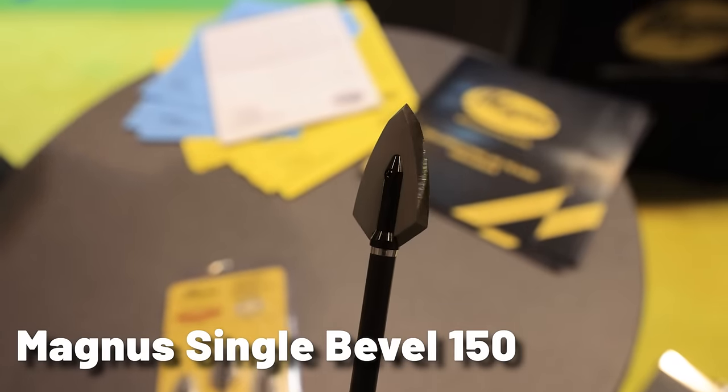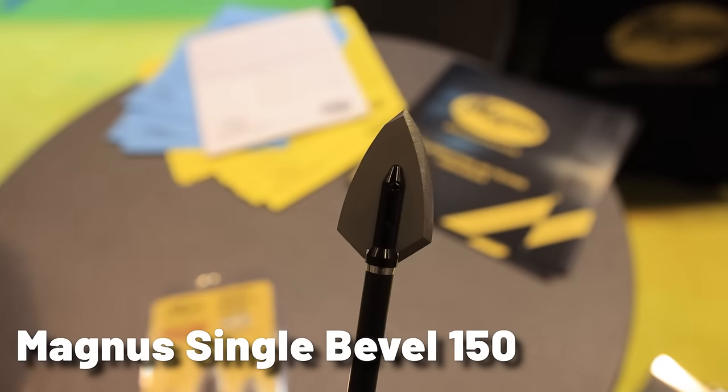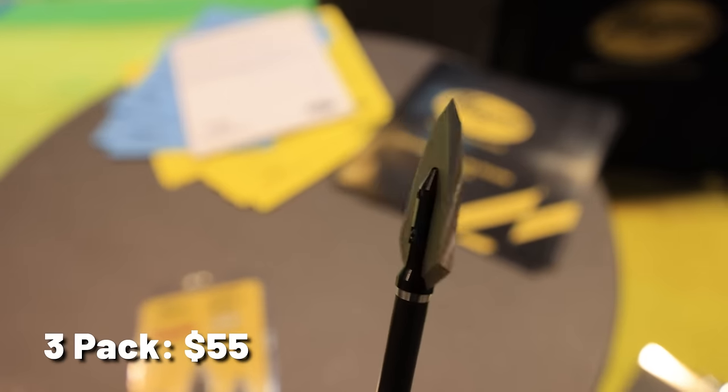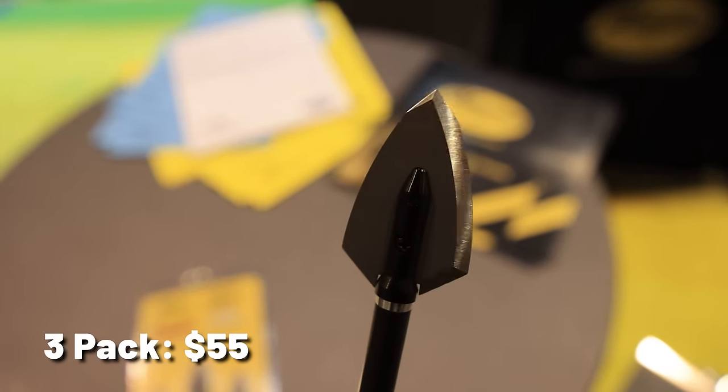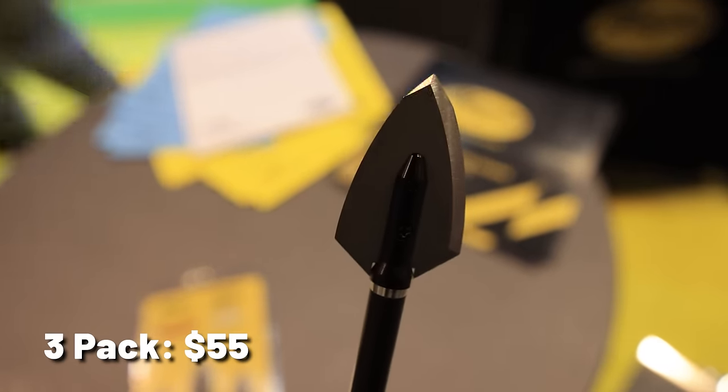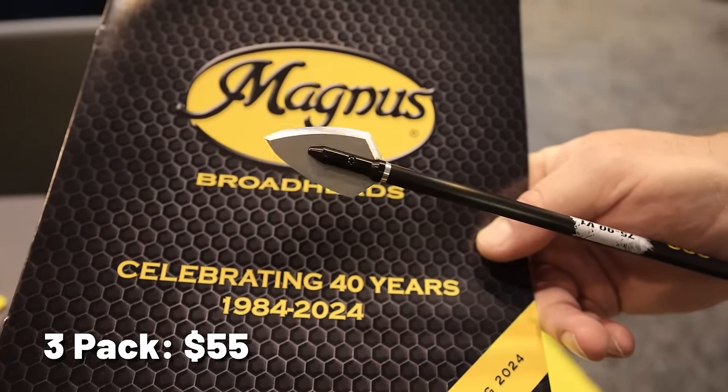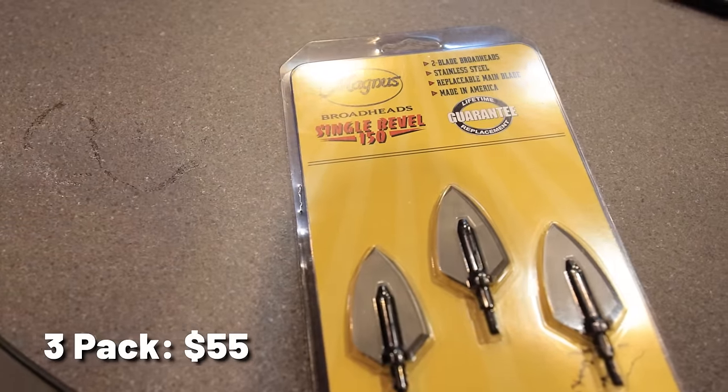Magnus Single Bevel 150. With the growing popularity of single-bevel, heavy-weight broadheads, Magnus has thrown their hat into the ring with the all-new Single Bevel 150. Featuring a single 59 thousandths thick main blade that is razor sharp, the SB150 is designed to penetrate heavy bone and deliver quick kills. A three-pack is going to retail for $55.